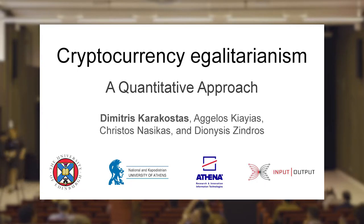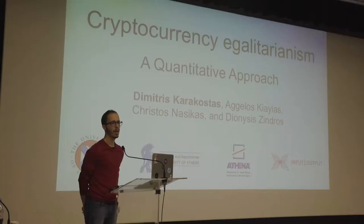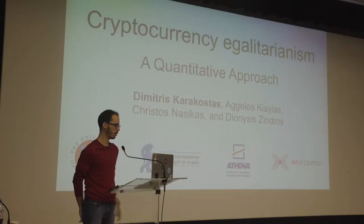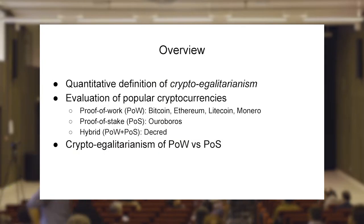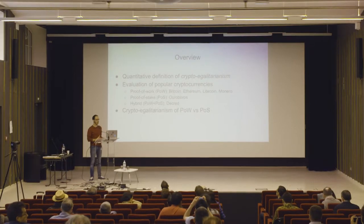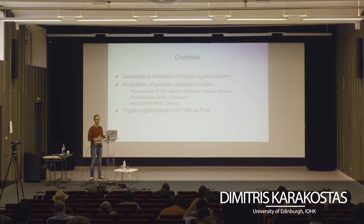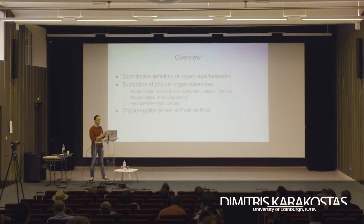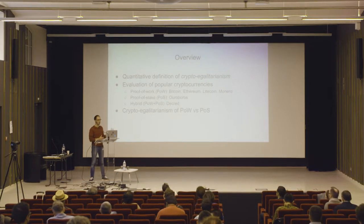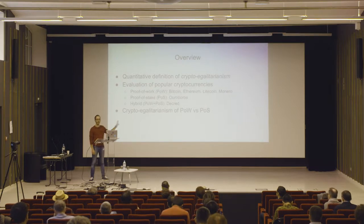Hi, thank you. My name is Dimitris, I come from Edinburgh, and this is a collaborative work from both Edinburgh and Athens. What I'm going to present today is a metric which we call cryptocurrency egalitarianism. What we try to do is evaluate various cryptocurrencies with respect to what we refer to as crypto egalitarianism. By the end of the presentation I will have shown how we applied this metric to existing systems, both proof-of-work and proof-of-stake, and a comparison between the two.